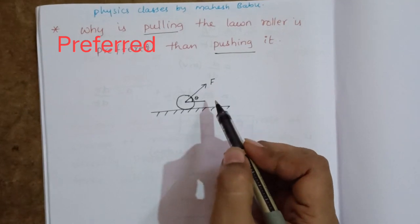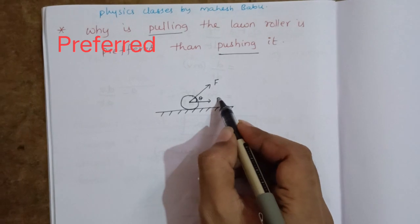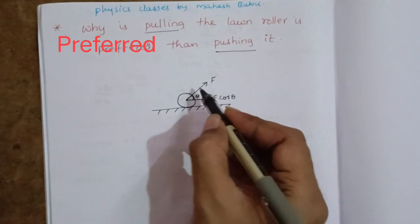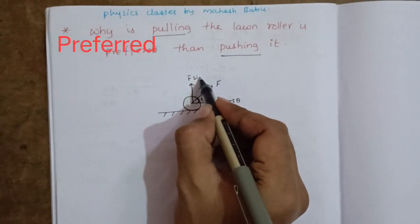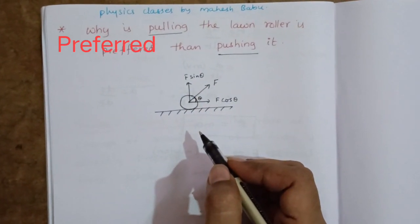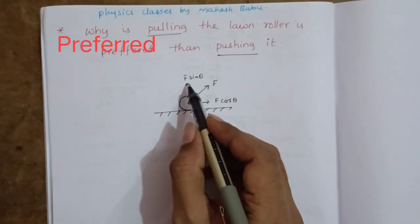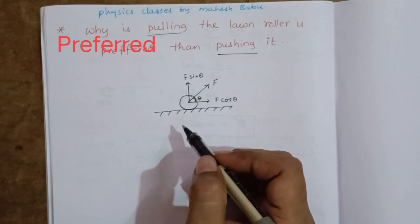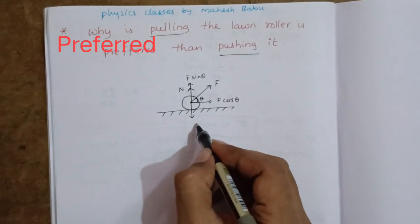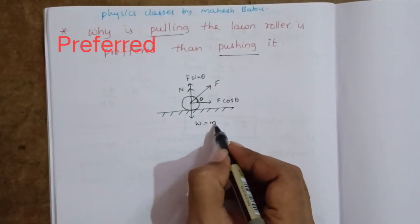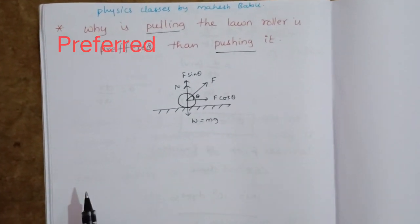The force F is resolved into two components: the horizontal component F cos theta and the vertical component F sin theta acting upward. Normal reaction also acts upward, while the weight W = Mg acts downward.